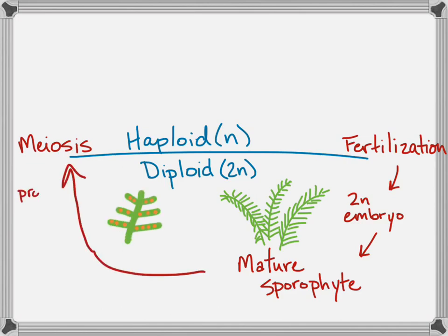Those spores we see on the underside of the leaves appear as these orange clusters. That process from diploid to haploid spores is meiosis — it's still that halving of the chromosome number.